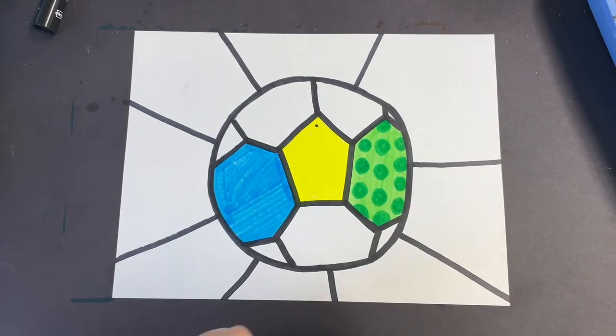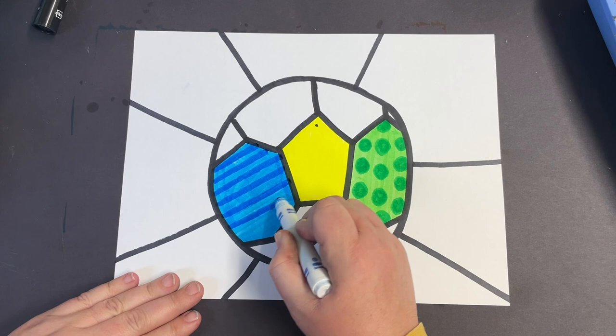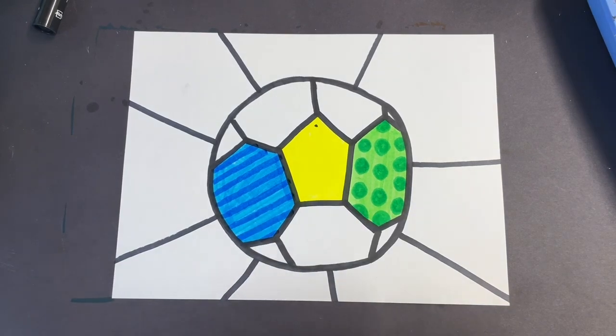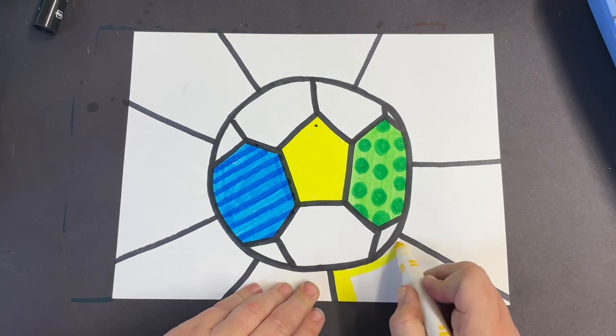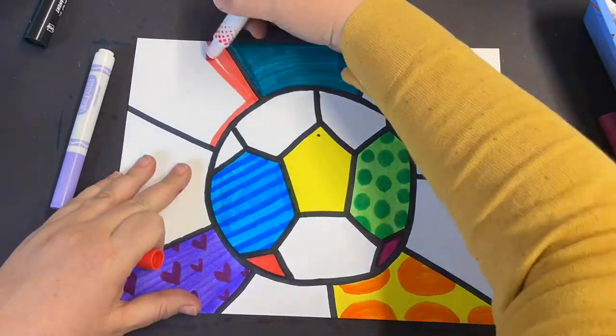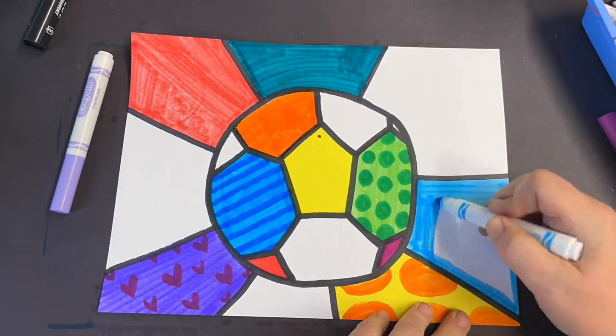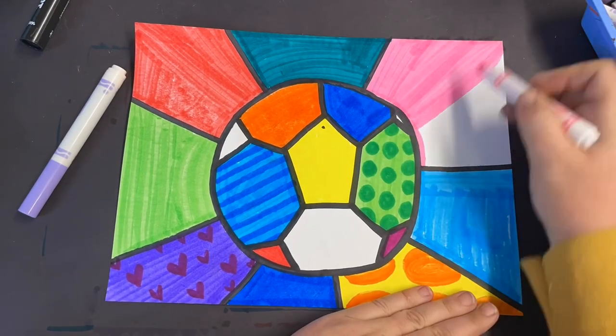You can keep going through your whole picture, filling in each section with a color or a pattern. We are not yet using black though. And also you don't want to make your patterns too small or detailed. You want them to be big and bold, inspired by Romero Brito's work.